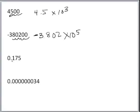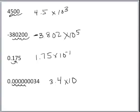For 0.175, we move the decimal to the right, giving us 1.75 times 10 to the negative 1. And for the last example, we move the decimal 8 places to the right, giving us 3.4 times 10 to the negative 8th. To summarize: if you move the decimal to the left, it's a positive exponent; if you move it to the right, it's a negative exponent.